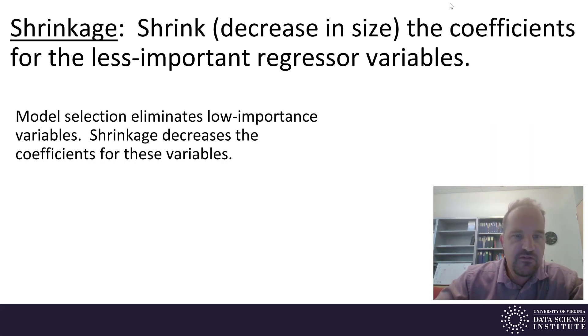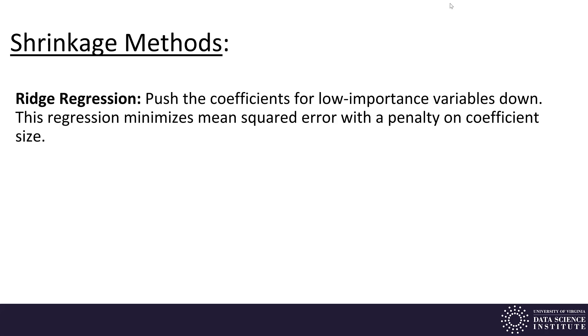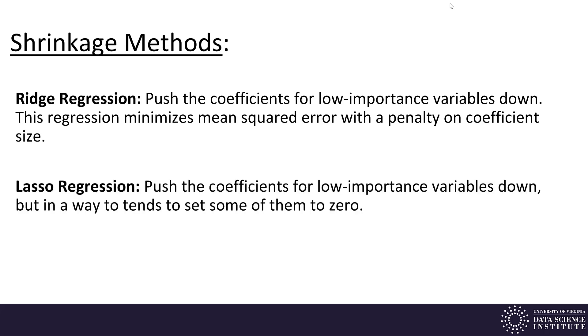In shrinkage, instead of eliminating variables completely, we're going to optimize things in a way that decreases coefficients for those variables. There are two main shrinkage methods: ridge regression, which pushes down the coefficients for low-importance variables, and LASSO regression.